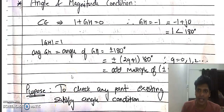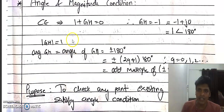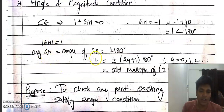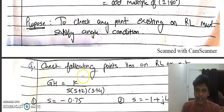In the last lecture, we had a quick recap: the angle condition is that whenever GH is equal to minus 1. So the magnitude of GH equals 1 and the argument or angle of GH is always plus or minus 180 degrees, or odd multiples of 180 degrees.